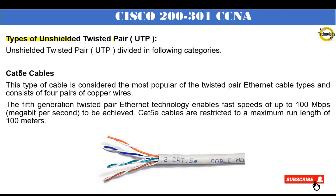Types of unshielded twisted pair (UTP), divided in the following categories. CAT5 cables: this type is considered the most popular of the twisted pair ethernet cable types and consists of four pairs of copper wires. The fifth generation twisted pair ethernet technology enables fast speeds of up to 100 Mbps (megabit per second). CAT5 cables are restricted to a maximum run length of 100 meters.